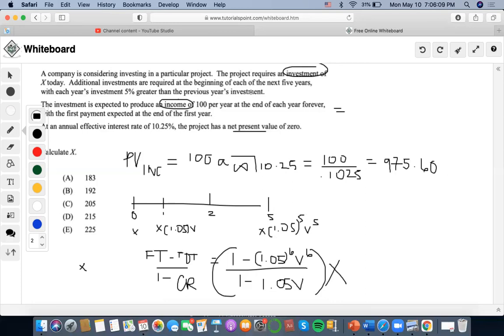If the project requires an investment and we're finding the present value of these investments, and at the same time, the project is expected to produce an income. At the end, it says that the net present value is 0, that means that the income that we're receiving exactly matches the investment that we are putting in. So, we're going to have to set these two equations equal to each other. But first, let's solve this.